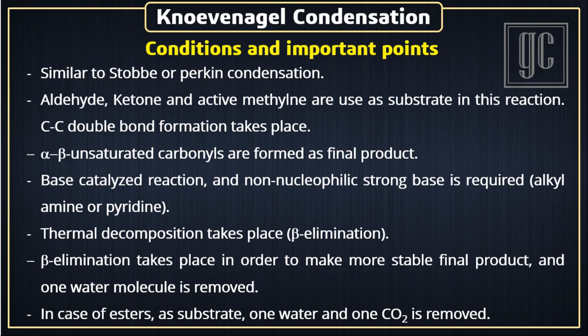The conditions and important points of the reaction: This reaction is just like Stobbe or Perkin condensation. Carbon-carbon double bond formation takes place in this reaction. Aldehydes, ketones, and active methylene compounds are used as substrates. A non-nucleophilic base is required to remove the acidic hydrogen atom. Thermal decomposition followed by beta-elimination gives the final product, and alpha-beta unsaturated acids are formed.